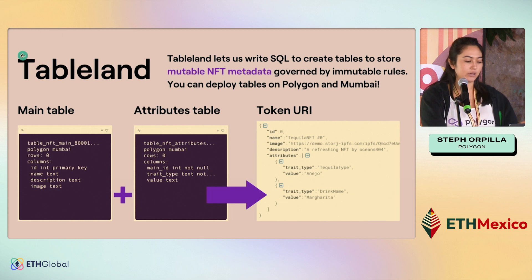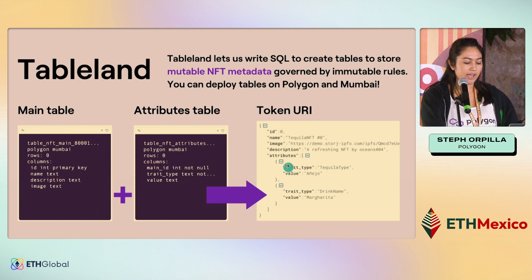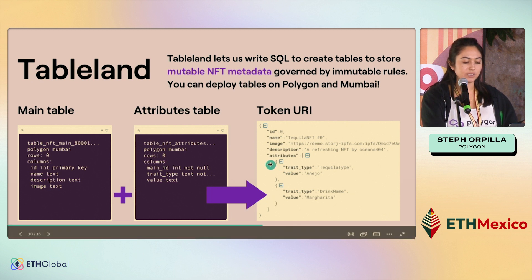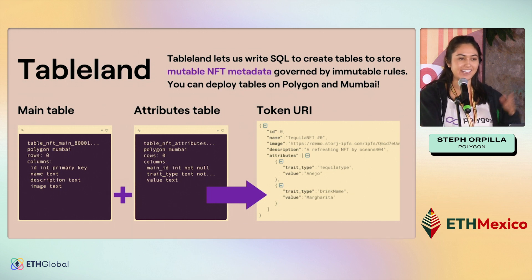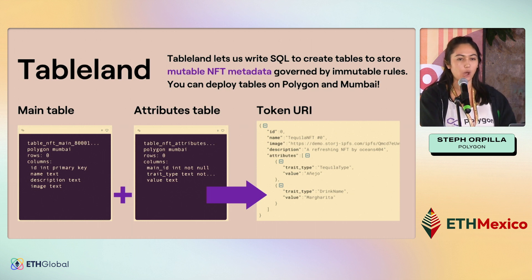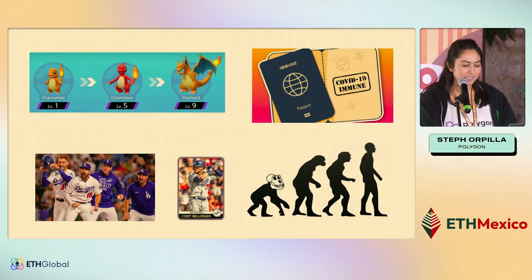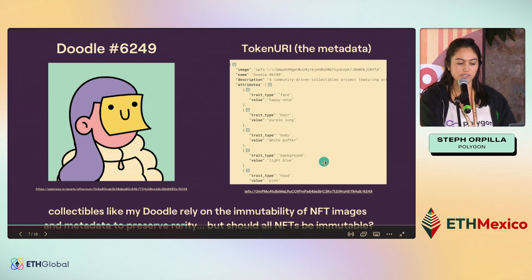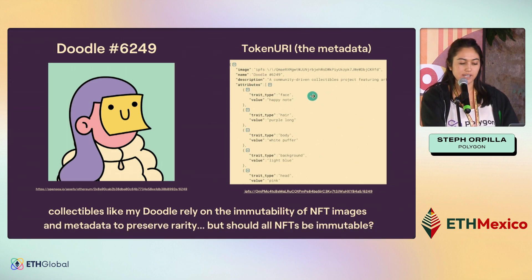In the DApp that I created, I made two different tables: a main table and an attributes table. The main table has ID, name, description, and image. The attributes table has all of the different trait types and values that you would see as part of an NFT. This is an example of one that I made today — I called it tequila NFT. Just to go back to the doodle quickly, you can see that the attributes are the same way, where it's an array of different objects, and each object has a trait type as well as a value.